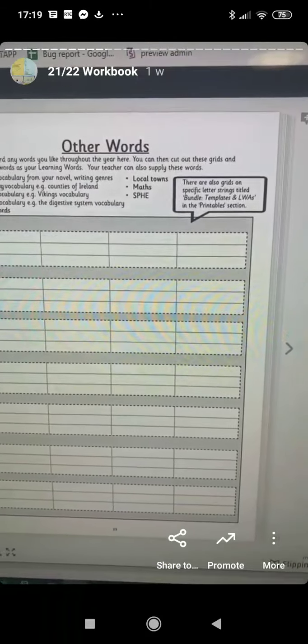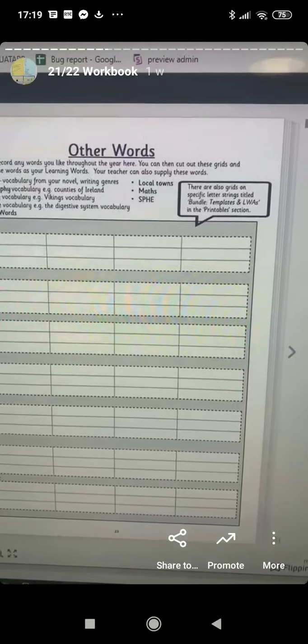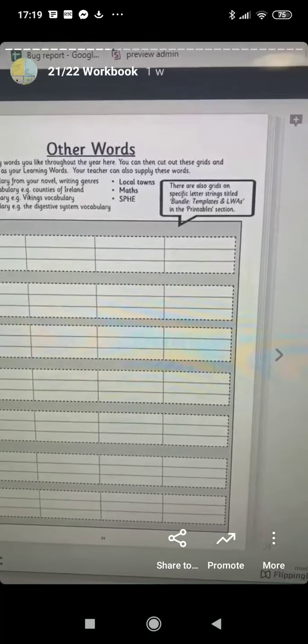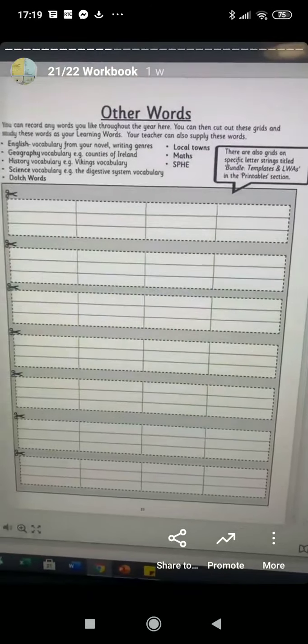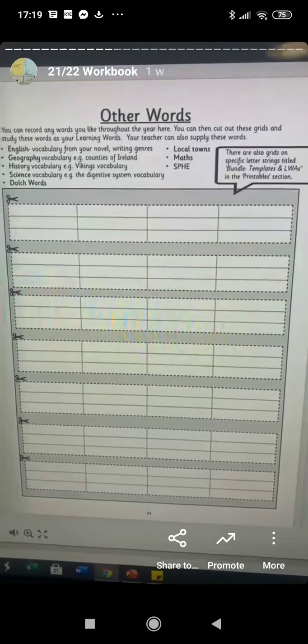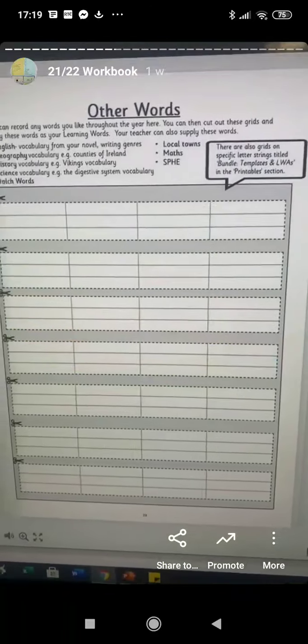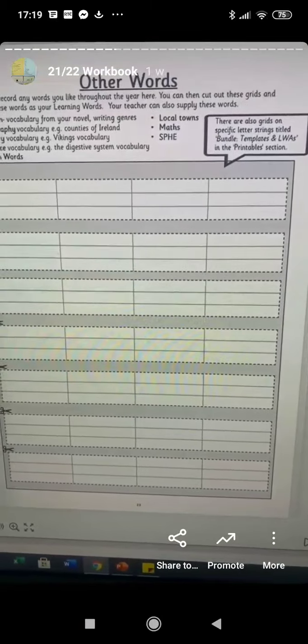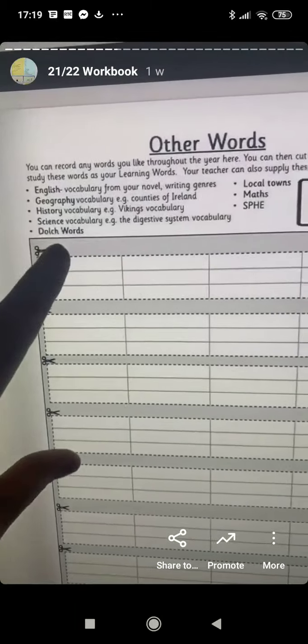Other words. So this is useful if you want to set specific words to children. So for example, if you're doing a project on Italy, you could assign spellings associated with Italy. So it's particularly useful for the weaker spellers and they'll be able to use those spellings in their report or whatever it is you're using. We have some examples up here on what you could use.